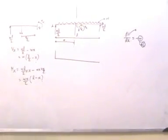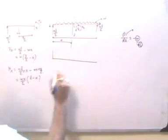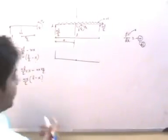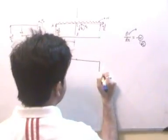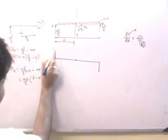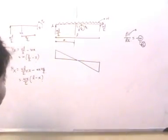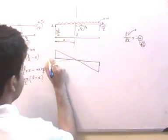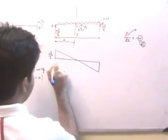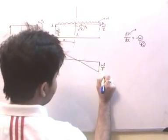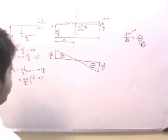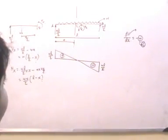At X equals L/2, the shear force is zero. At X equals L, it equals minus WL/2, a negative value. Joining these three points gives the shear force diagram — positive WL/2 on one side and negative WL/2 on the other.